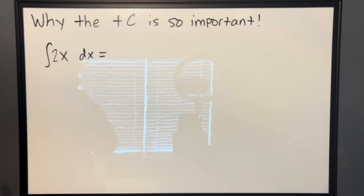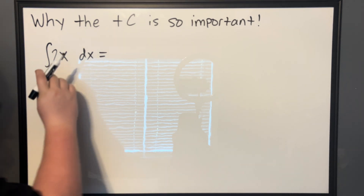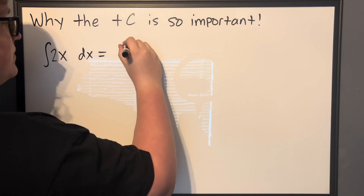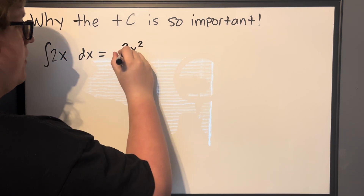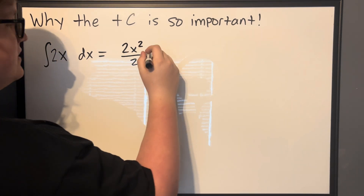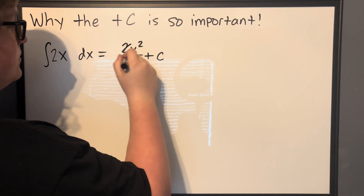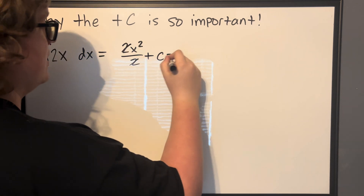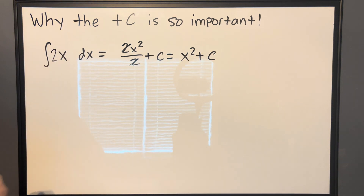Let's look at the integral of 2x dx. Now, this is not one of those hard integrals I'm talking about — this is pretty standard practice. We use the power rule: 2x squared over 2, and the 2s cancel. We need the plus C, so we end up with x squared plus C.